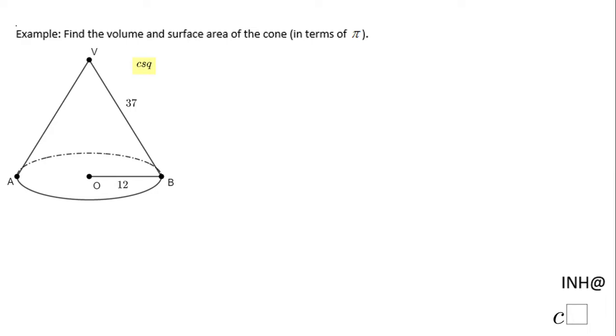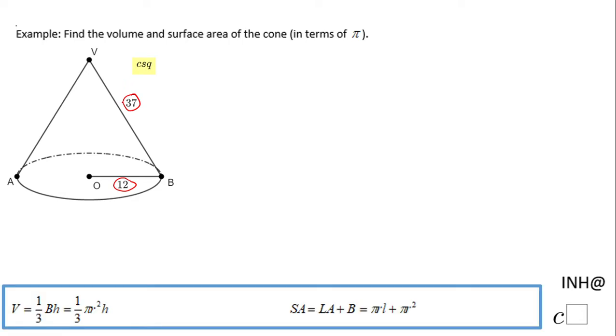Welcome back with INH at C-Squared. In this example we need to find the volume and the surface area of the cone below. We notice here we have the radius which is 12 and this here is what we call the slant height.